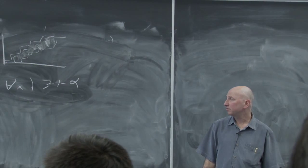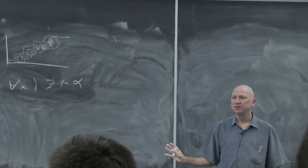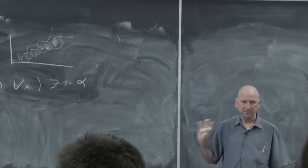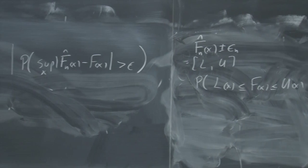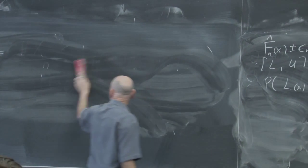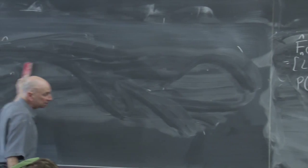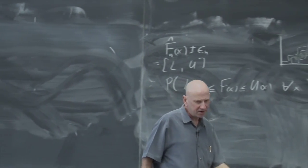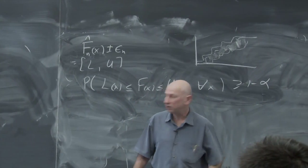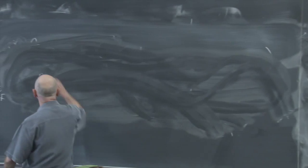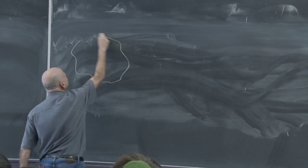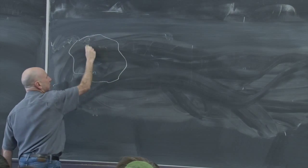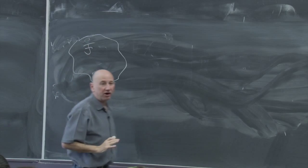That's the frequentist solution to estimating the CDF. Now we'll do the Bayesian one. The most common way is to use something called the Dirichlet process, invented by statistician Tom Ferguson at UCLA in 1973. There are vexing questions: what's the parameter space? It's kind of hard to picture — it's the set of all CDFs on the real line. It's a really infinite-dimensional set — you can't parameterize it by a finite number of parameters. Each point in this space represents a CDF.